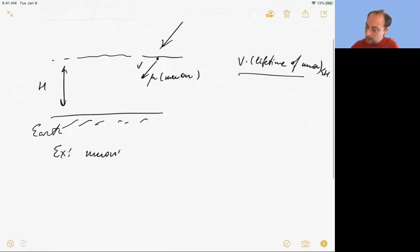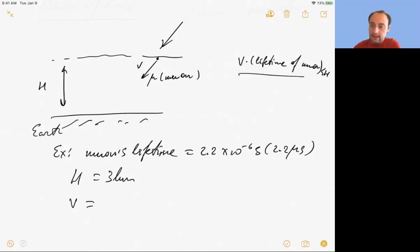So its own internal processes will slow down according to Earth, and therefore it survives long enough time to reach the ground. So let's look at an example. Muon's lifetime equals 2.2 times 10^-6 seconds, 2.2 microseconds. There are some subtleties here I'm not going to discuss. Let's say H equals three kilometers, muon is created three kilometers above the ground, and it's moving at 98% of the speed of light, V equals 0.98 C.